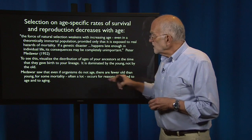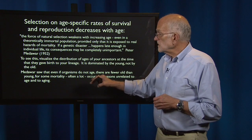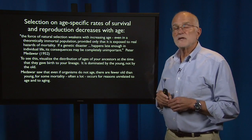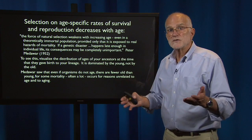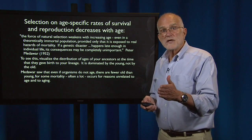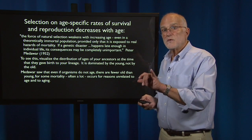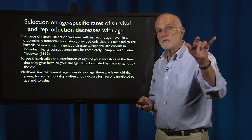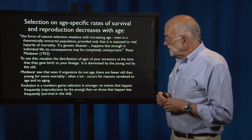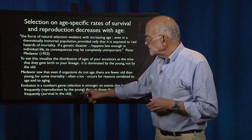Medawar saw that even if organisms do not age, there are fewer old than young, because there is some mortality — often a lot — that occurs for reasons unrelated to age and aging. Mortality due to accidents can eliminate people even if they're in good shape. Therefore the number of people in a population that are old must be less than the number that are young. Evolution is a numbers game: selection is stronger on events that happen frequently.